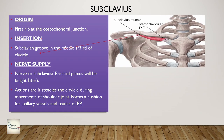Coming to the subclavius muscle - the origin is from the first rib at the costochondral junction. The insertion is in the subclavian groove on the inferior surface of the middle one-third of the clavicle. The nerve supply is the nerve to subclavius from the brachial plexus. Its actions are: it steadies the clavicle during movements of the shoulder joint, and it forms a cushion protecting the axillary vessels and trunks of the brachial plexus.